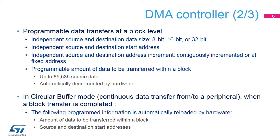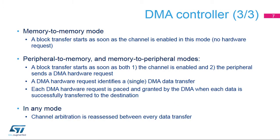In circular buffer mode, continuous data transfer from or to a peripheral occurs when a block transfer is completed. The programmed amount of data to be transferred within a block is automatically reloaded by hardware, as well as the source and destination start addresses. In memory-to-memory mode, a block transfer starts as soon as the channel is enabled — there is no hardware request. In peripheral-to-memory and memory-to-peripheral modes, a block transfer starts as soon as both the channel is enabled and the peripheral sends a DMA hardware request.